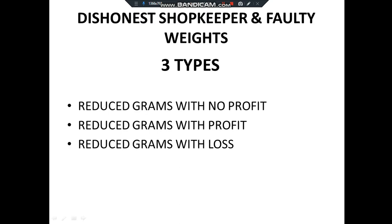I'll give you an outline of how these questions work and then we'll go into the details. There are three types. The first type is: reduces the grams with no profit — actually he earns profit, but in an indirect way. He shows customers that he doesn't take any profit, but he actually does. For a thousand grams he should give a thousand grams, but instead he gives only 900 grams and pretends to give a thousand grams. From that hundred grams he earns a profit.